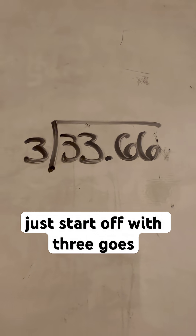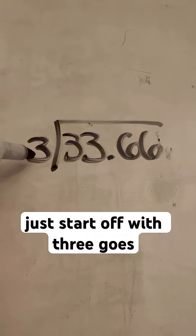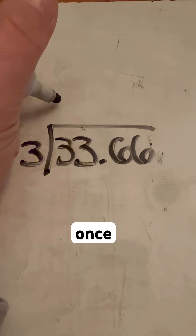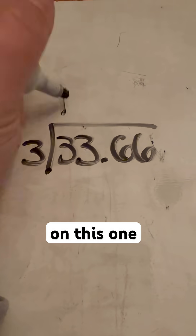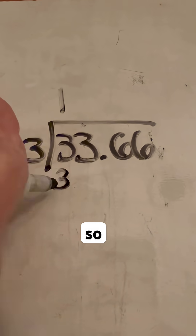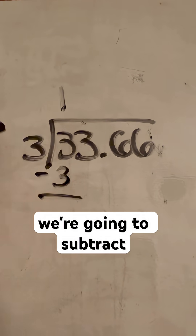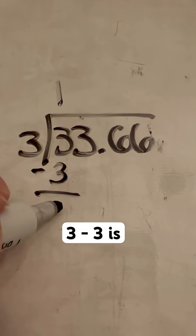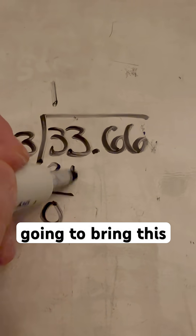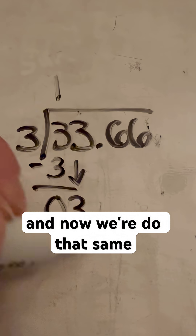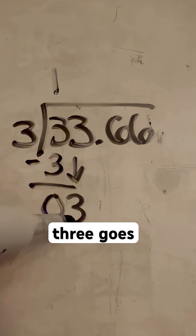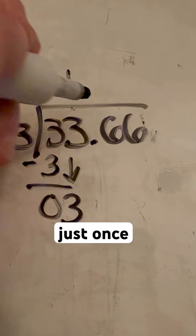We're just going to simply start off with 3 goes into 3 — how many times? Only once on this one. So I'm going to put 3 times 1 is 3. We're going to subtract this, 3 minus 3 is 0. We're going to bring this 3 down and now we're going to do that same thing all over again. 3 goes into 3 again just once.